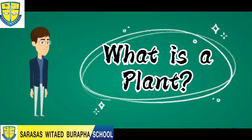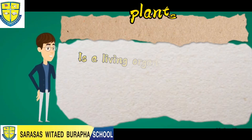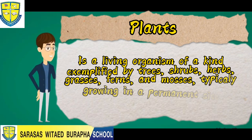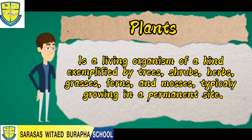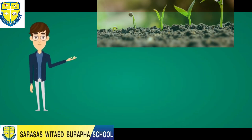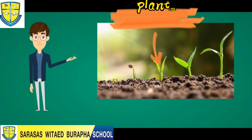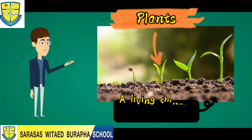A plant is a living organism of a kind exemplified by trees, shrubs, herbs, grasses, ferns, and mosses, typically growing in a permanent site. In simpler terms, a plant is an example of a living thing.